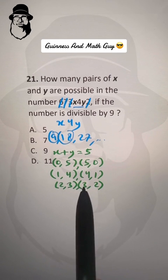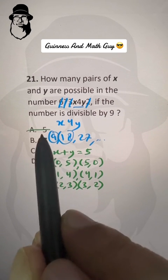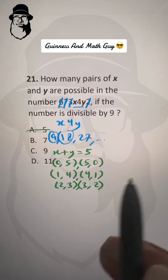5 plus 4 is 9. So 1, 2, 3, 4, 5, 6. So this is already gone, this choice.